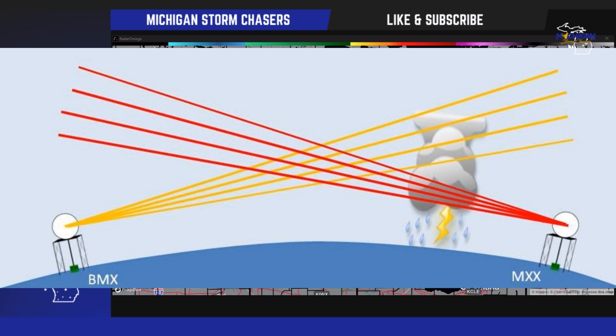That is the major limitation of weather radar — it's by no means perfect, but it's all we really have besides ground truth, spotters, and storm chasers reporting what's actually happening. The closer you get to the radar, the closer to the ground the beam is. For example, from Detroit's radar site to Ann Arbor, the radar beam height is approximately 1,800 feet. So the closer you are to the radar, the better the accuracy of the data.